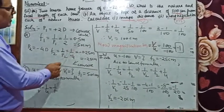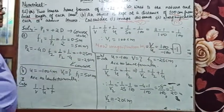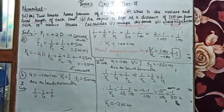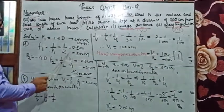In this way, 50 centimeter means it is our convex lens and its focal length is positive.